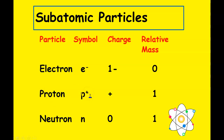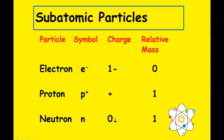The next particle is the proton. The symbol is P with a positive plus, because it has a charge of plus one, and it has mass — its relative mass is one. The neutron is the last particle of your atom. Its symbol is n, sometimes written with a small zero, because it has a charge of zero, meaning neutral, and it also has mass.